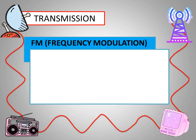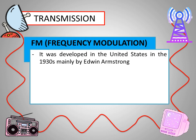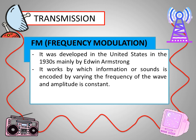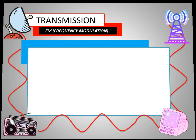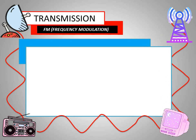FM stands for frequency modulation. It was developed in the United States in the 1930s mainly by Edwin Armstrong. FM works by encoding information or sound by varying the frequency of the wave while amplitude is kept constant. Its frequency ranges in a higher spectrum from 88 to 108 MHz.